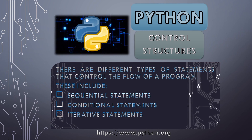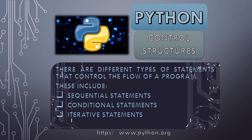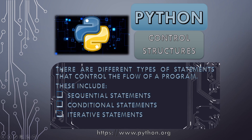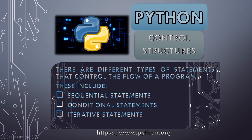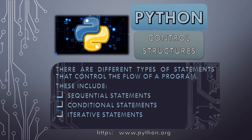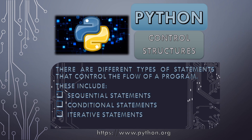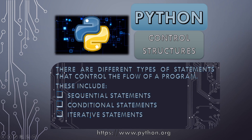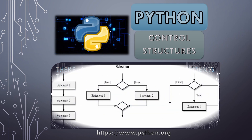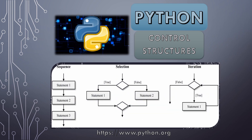There are three types of control structures. The first one is sequential statements, the second is conditional statements, and the third is iterative statements. Sequential means statements are executed one after another in a sequence. Conditional means we have some condition and based on that the flow of control travels. Iterative means we have some kind of repetition.